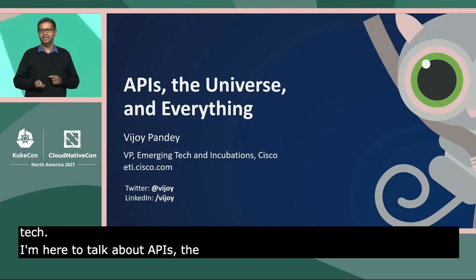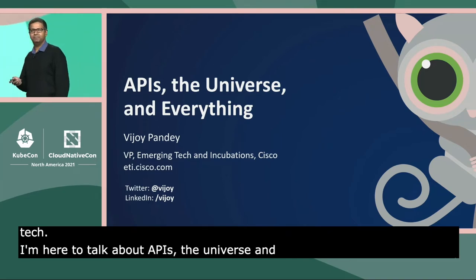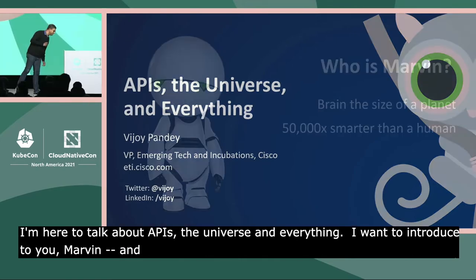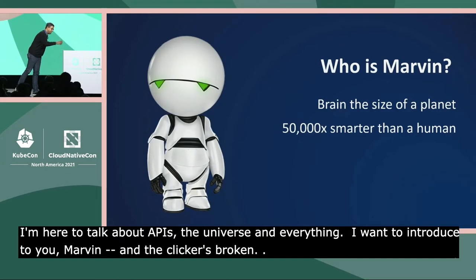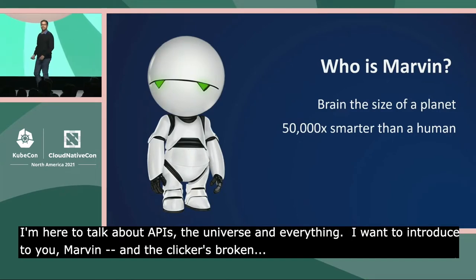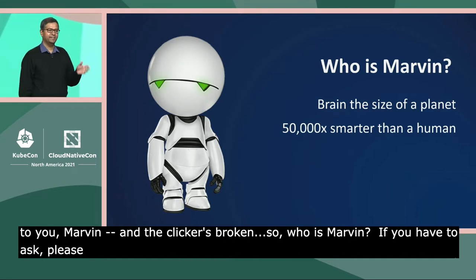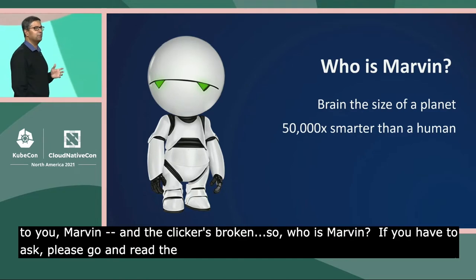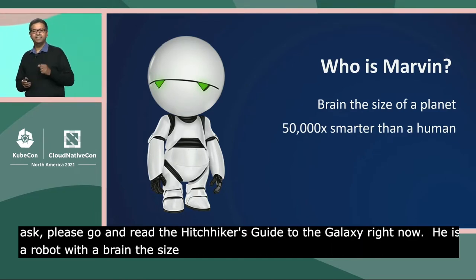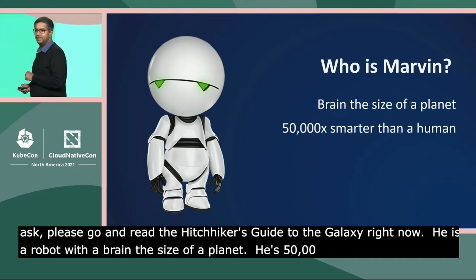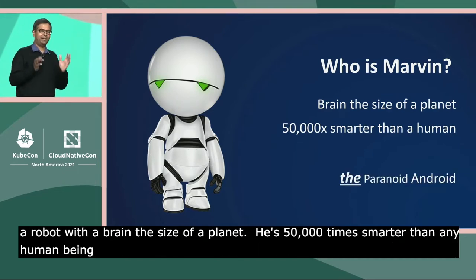Before I get there, I want to introduce to you Marvin. So who is Marvin? If you have to ask, please go and read The Hitchhiker's Guide to the Galaxy right now. He is a robot with a brain the size of a planet. He's 50,000 times smarter than any human being. But most importantly, he is the paranoid android.